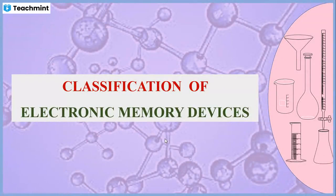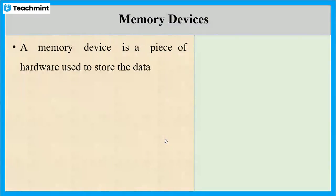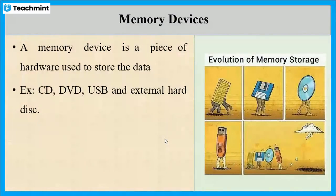In this session, let us discuss electronic memory devices. First, let us see what is an electronic memory device. It is a hardware unit which is used to store data. Examples include CD, DVD, pen drive, external hard disk, etc. All these we are using for saving data.